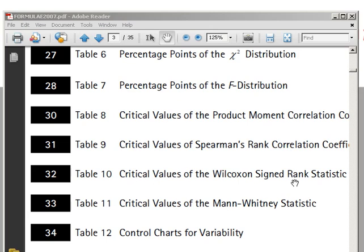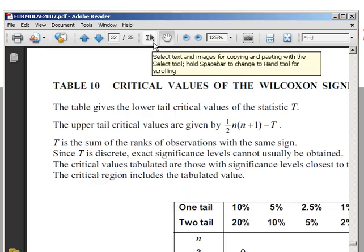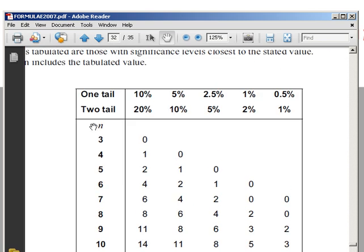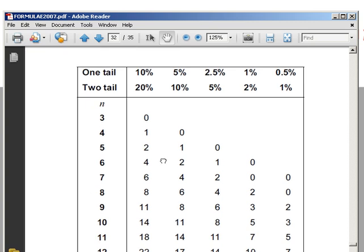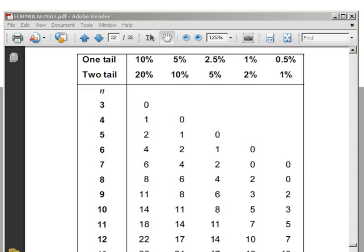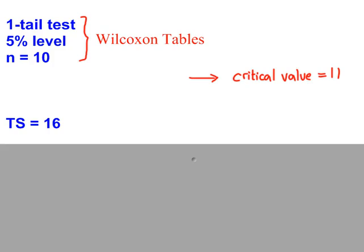Critical values of the Wilcoxon signed rank statistic. Table 10, page 32. And we have this table, where you have the n value along here. And then whether it's a 1 or a 2 tail test at the significance level. We're doing a 1 tail test at the 5% level, n is equal to 10. 1 tail, 5%, n equals 10. Our critical value is 11. So the critical value is 11, our test statistic was 16.